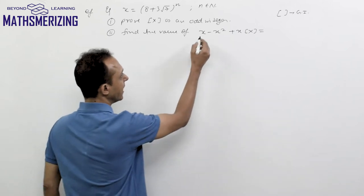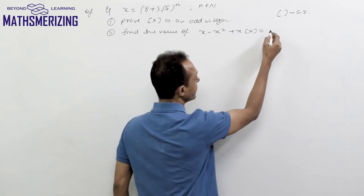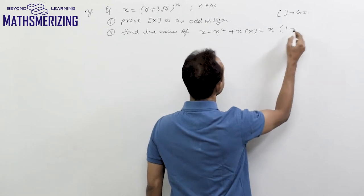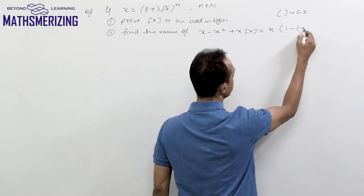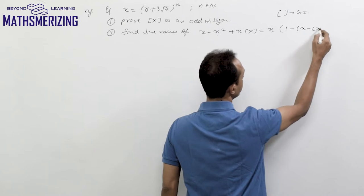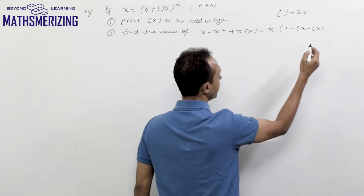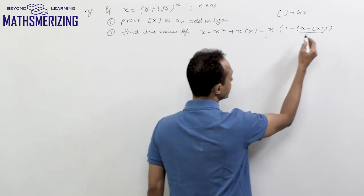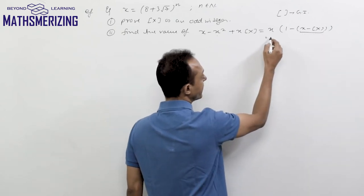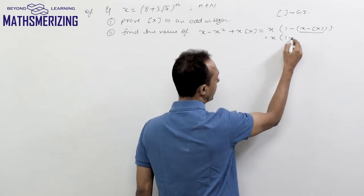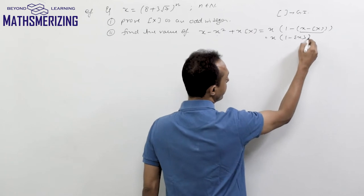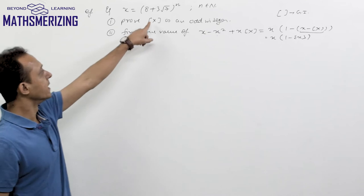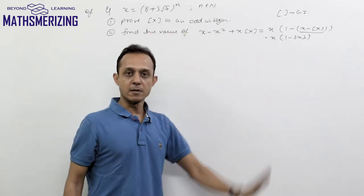Taking x common, we can write x into (1 minus the greatest integer function of x). Now x minus the greatest integer function of x is nothing but the fractional part of x. So we need to find x into (1 minus fractional part of x). This question involves both the greatest integer function as well as the fractional part function.